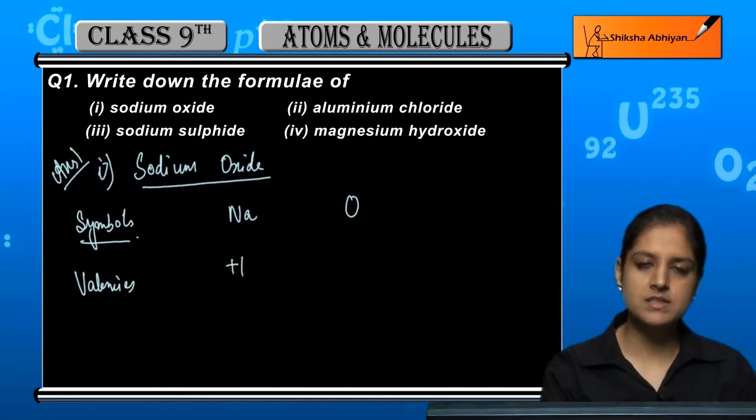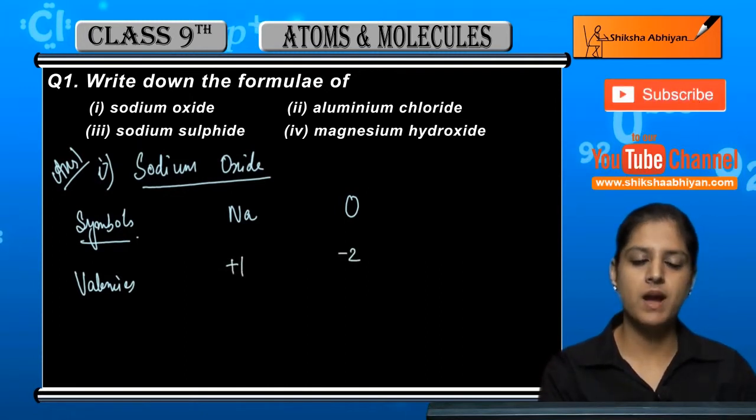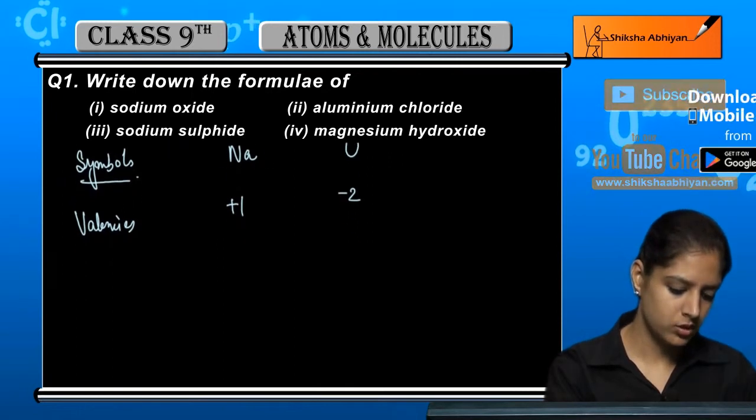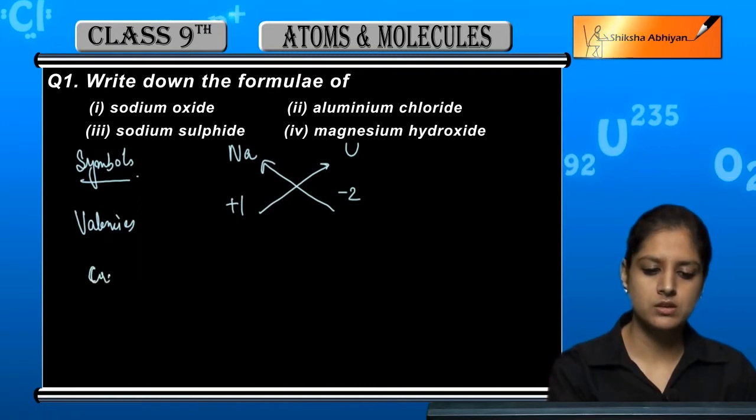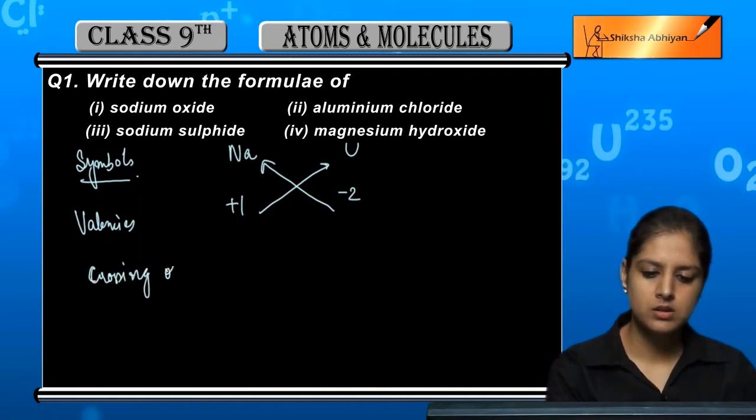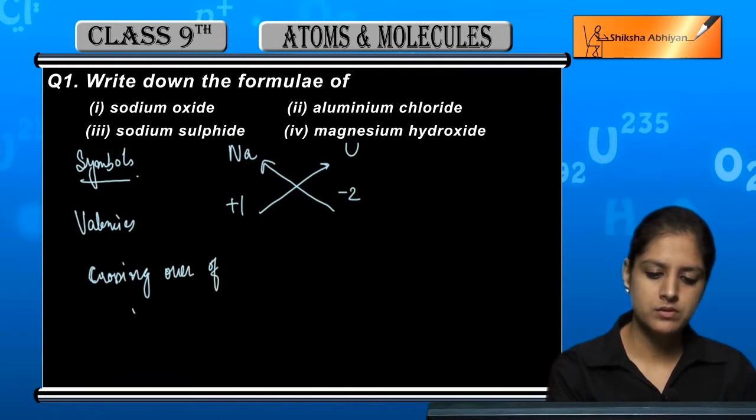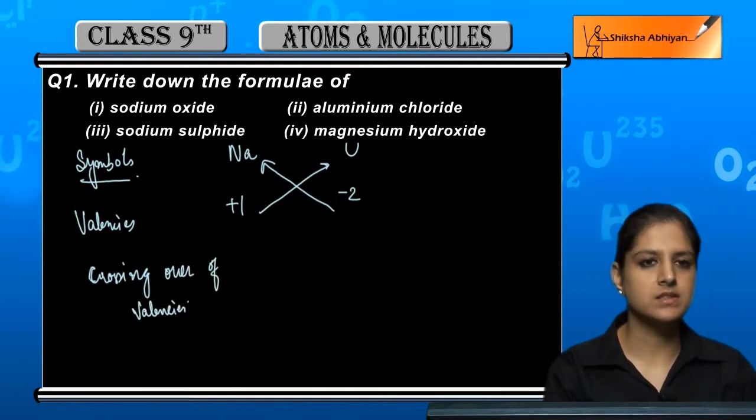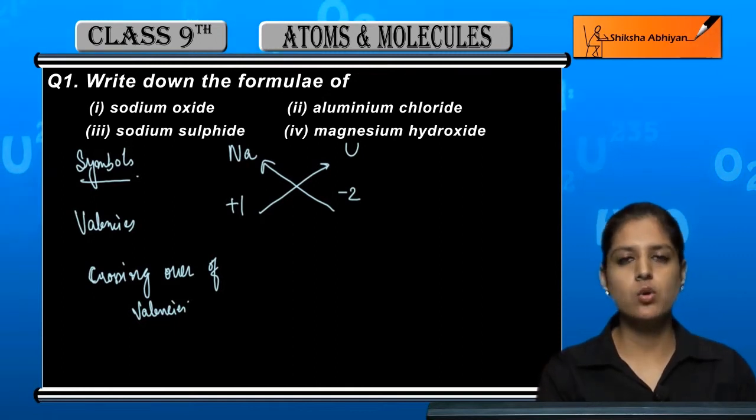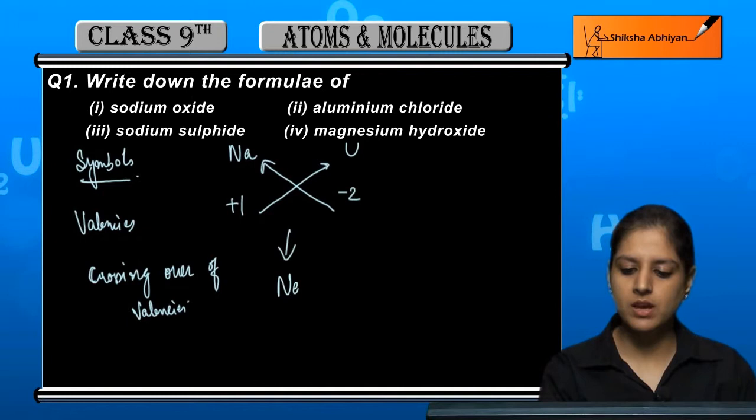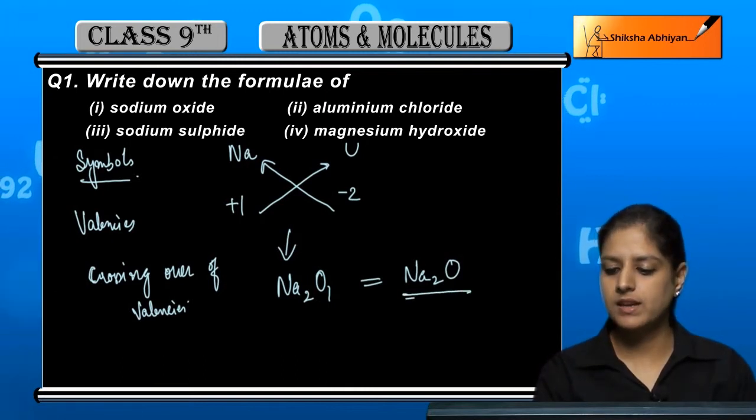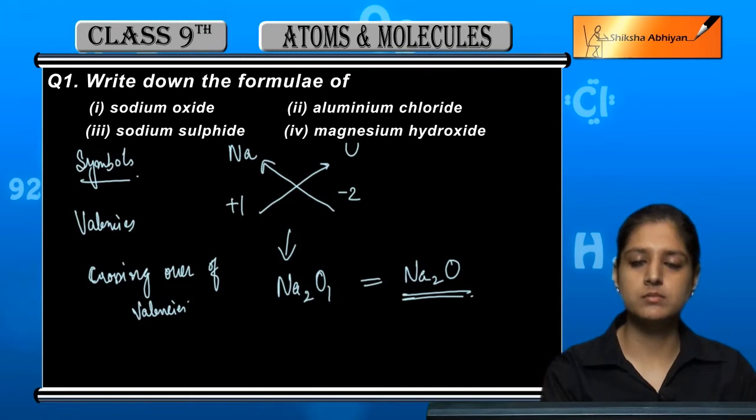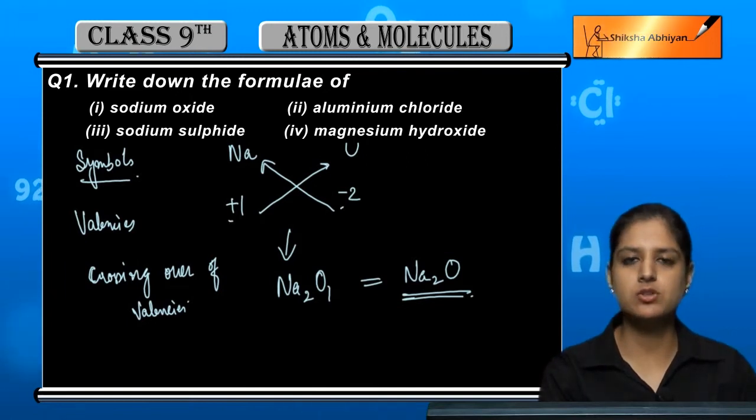Valency: sodium's valency is plus one and oxide's valency is minus two. In the third step, we cross over the valencies. So Na gets minus two and O gets plus one. The formula becomes Na2O1, or simply Na2O. Sodium oxide's formula is Na2O.